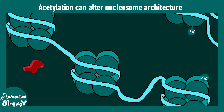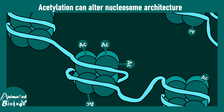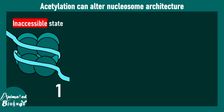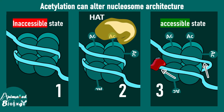Acetylation is really important for gene expression. Consider a transcription factor that tries to gain access to the DNA promoter but fails because the DNA is tightly packed. Here comes histone acetyltransferase, which is a writer — it writes acetylation, and as a consequence the chromatin opens up. It is now loosely wrapped, the transcription factor gains access, and can perform its job. The inaccessible state of the chromatin becomes more accessible as a result of acetylation, thereby altering gene expression.